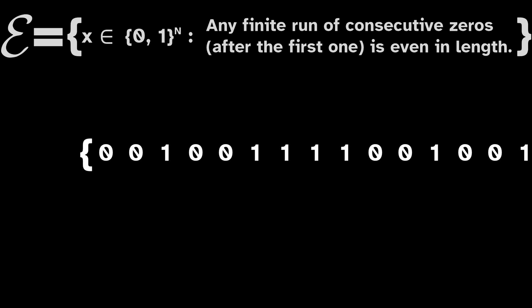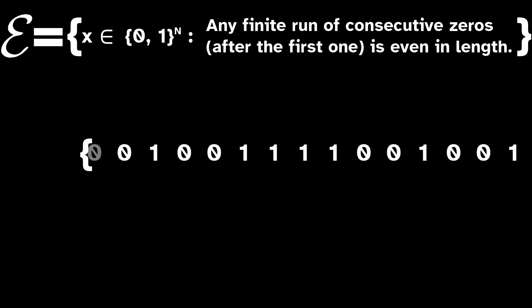Any consecutive run of zeros after the first one must be even in length. This rule is also shift invariant, so it generates a proper subshift. The reason we have to add the caveat after the first run of zeros is because, for example, the sequence starting 0, 0, 1 does satisfy a rule, but if you shift it to obtain one starting with 0, 1, then the first run of zeros is now odd in length.